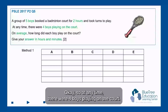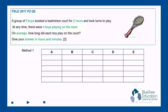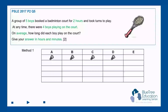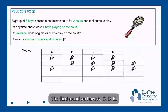At any time there were four boys playing on the court, so we're going to group them in groups of four. For the first round we have A, B, C, D. The second round we have B, C, D, and E.